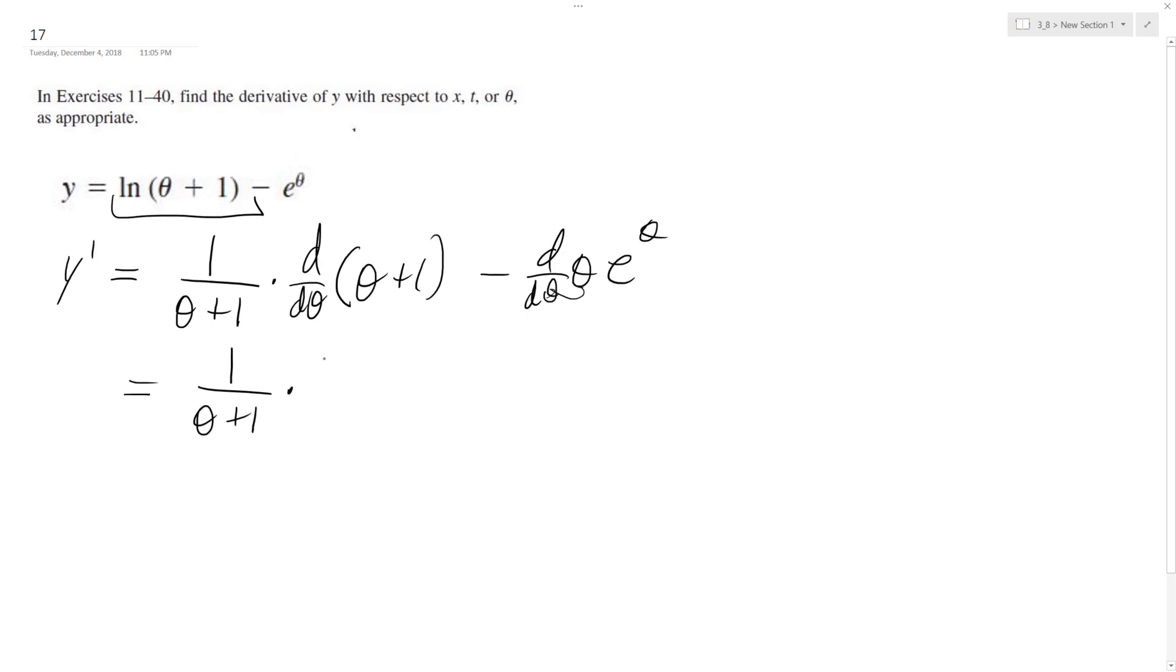the derivative of theta is just 1, and then the derivative of this is 0 - or the derivative of 1 is a constant, so it's just 0. So you can just get rid of that,